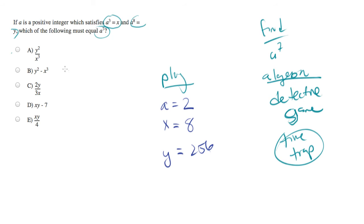Let's simply try plugging in. Let's figure out what our target is. We've been asked to find a to the seventh, so our target is actually 128.